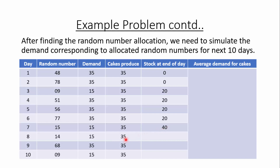For day 8, production is 35 and demand is 15, so 20 cakes remain, which add to the existing stock of 40, giving a stock of 60 at end of day 8. For day 9, production is 35 and demand is 35, so all are consumed and stock stays at 60, carried forward. For day 10, production is 35 and demand is 15, so 20 remain and add to 60, giving a final stock of 80 cakes at the end of 10 days.